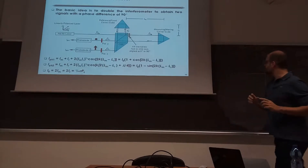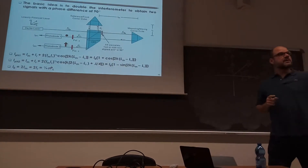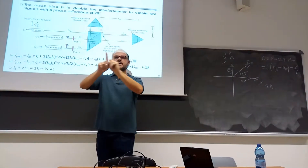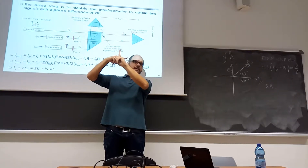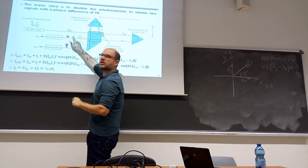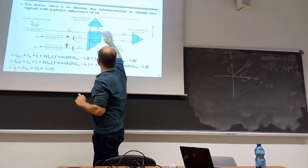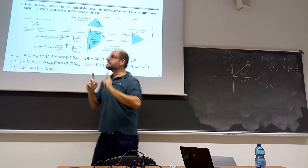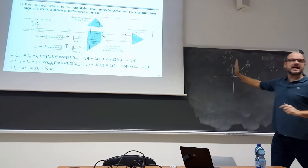What does it mean that I take the component only along this direction? To have interference, the field must have the same direction. If I have orthogonality between the two fields, I don't have interference. That is the key point. So here I want to take the two components orthogonal to the slide from the reference field and the measuring field, and build up the first signal. The component orthogonal to the slide sees the fast axis.